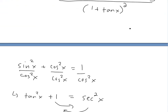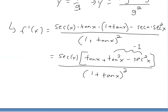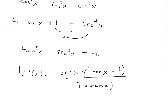So our final answer for the derivative is f prime of x equals secant x times the quantity tan x minus 1, all divided by 1 plus tan x, squared.